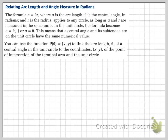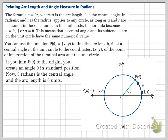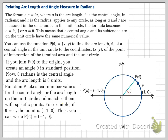You can use the function P(θ) = (x, y) to link the arc length of a central angle in the unit circle to the coordinates (x, y) of the point of intersection of the terminal arm and the unit circle. If you join P(θ) to the origin, you create an angle in standard position. For example, if θ = π, the point is (-1, 0), so P(π) = (-1, 0).